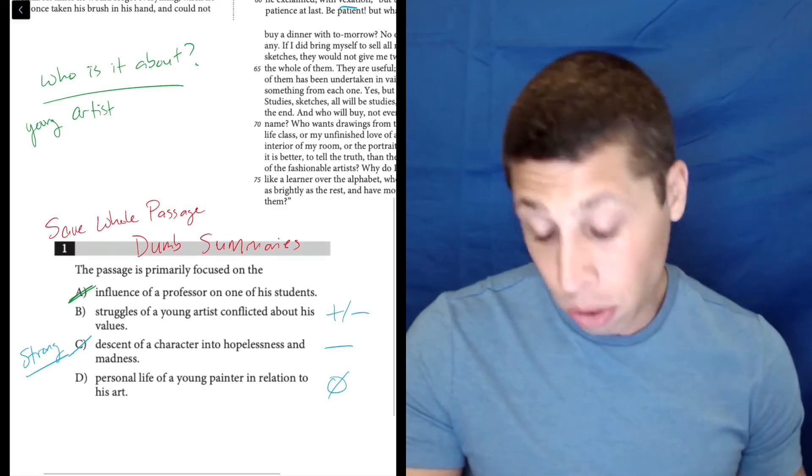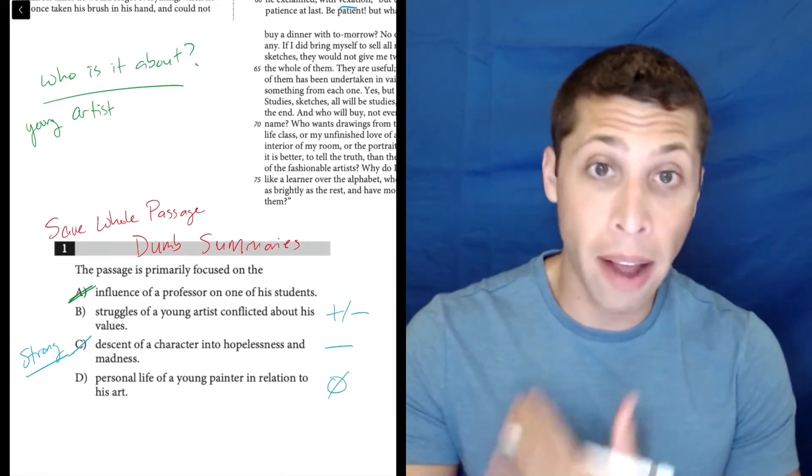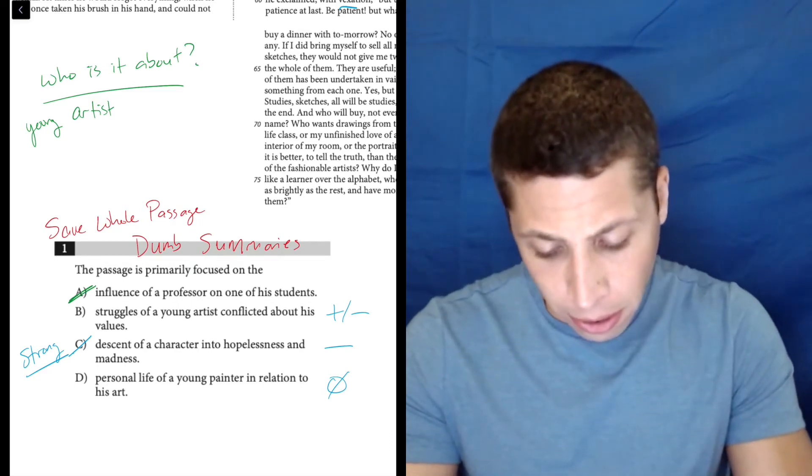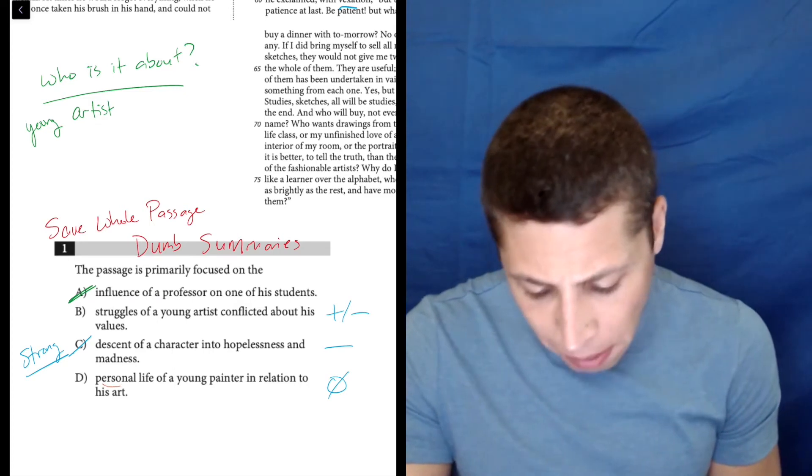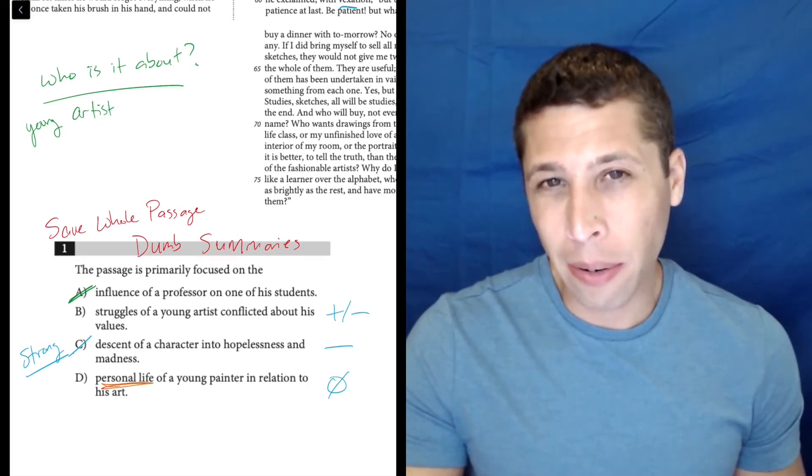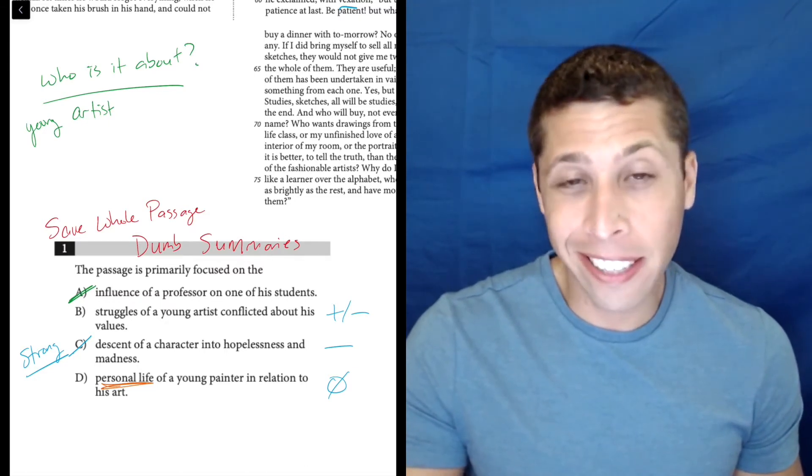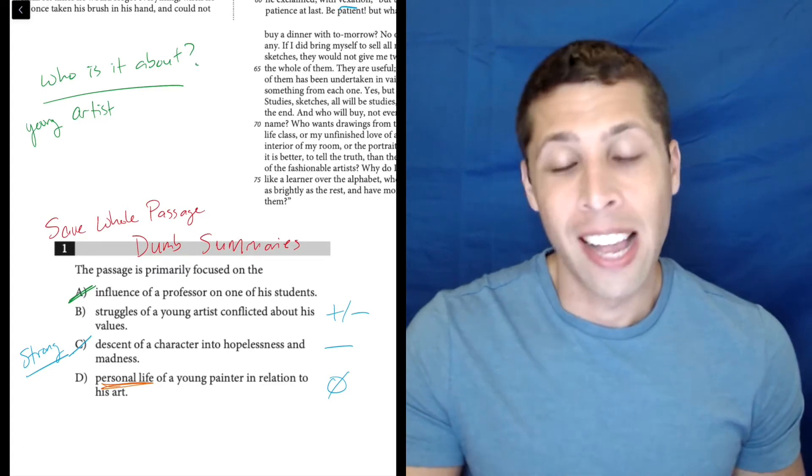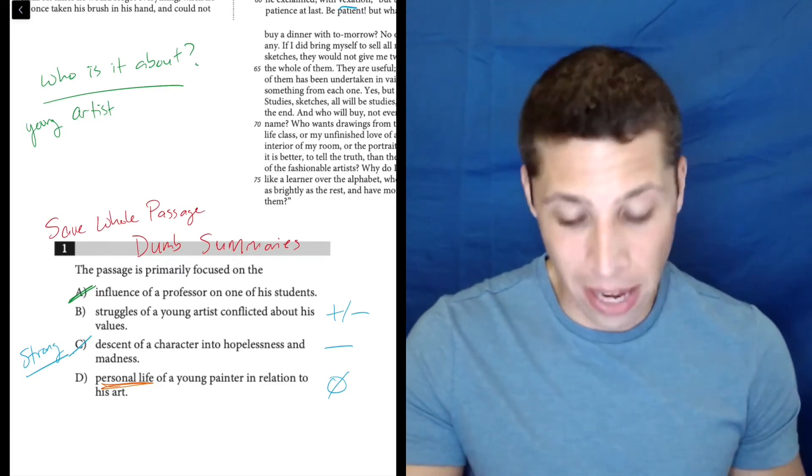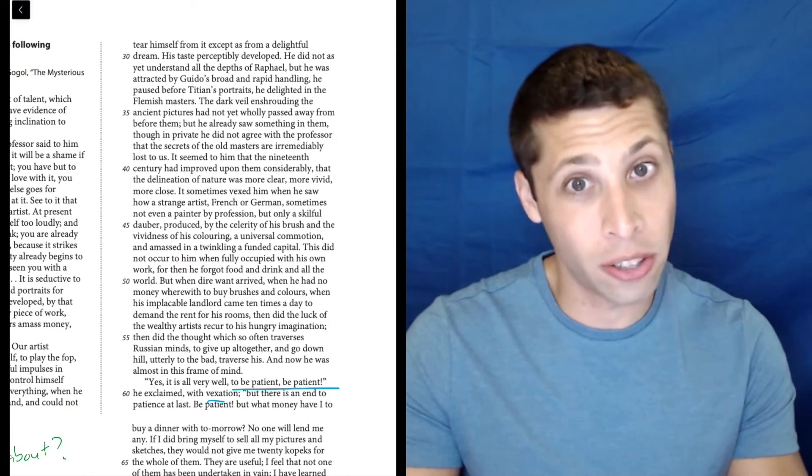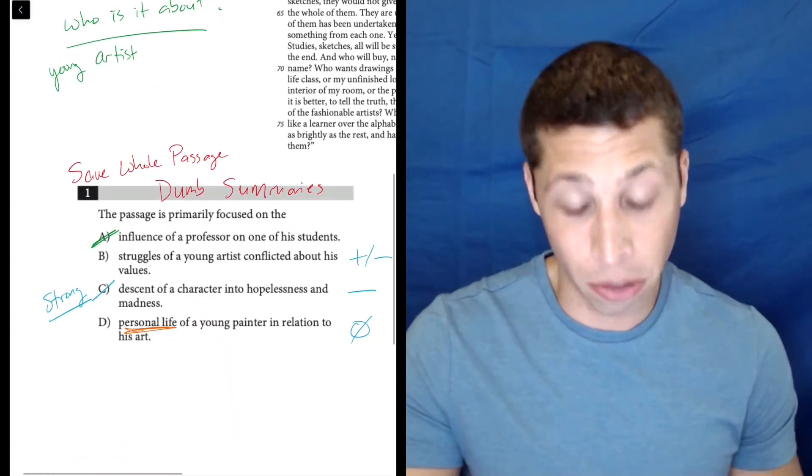So as far as the other two, normally I would gravitate towards choice D because it's very vague. But we have to be careful here. Is it really about his personal life? I guess we're learning that he's broke, but is he dating anybody? Who are his friends? Who's his family? We're not really getting into his personal life. In fact, most of this thing is about him learning about art and then his relationship with the professor.